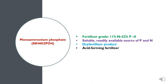The next water soluble Phosphatic fertilizer is mono ammonium phosphate, which is also a soluble and readily available source of Phosphorus and Nitrogen. It contains 52% Phosphorus and 11% Nitrogen. This is also a dry fertilizer product and has acid forming nature.